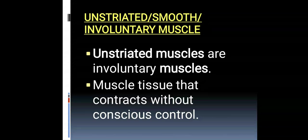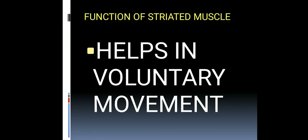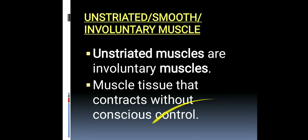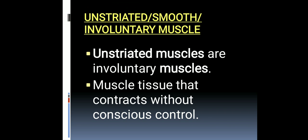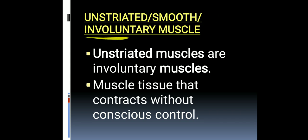Hello students. We were discussing about muscular tissue. We have already discussed about striated muscles. Today we are starting with the second type of muscular tissue, that is un-striated muscular tissue, which is also known as smooth muscular tissue or involuntary muscular tissue.